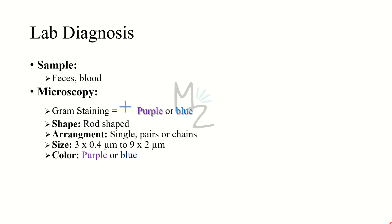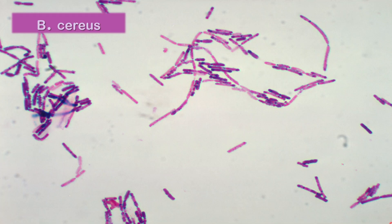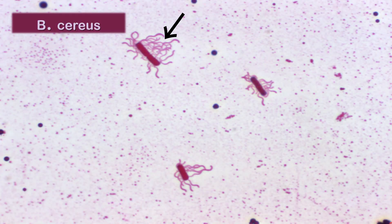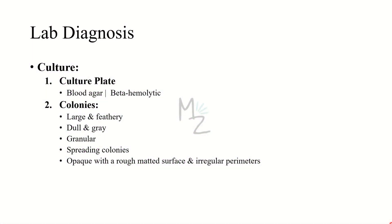Lab diagnosis requires samples of feces and blood. On gram staining, the bacterium appears gram positive (purple or blue). On microscopy, it is rod-shaped, occurring in pairs or chains, or as a single bacterium, varying in size from 3×0.4 to 9×2 micrometers, with square ends, encapsulated, and flagella visible. For culture, blood agar is used. Bacillus cereus is beta-hemolytic (complete hemolysis), unlike Bacillus anthracis which is non-hemolytic. Colonies are large, feathery, dull, and gray — hence 'cereus' meaning wax-like — granular, spreading, opaque with a rough matted surface and irregular margins.